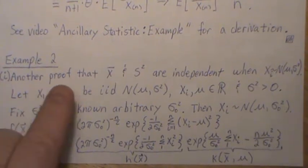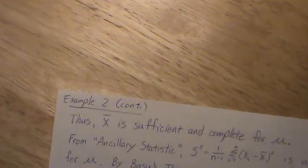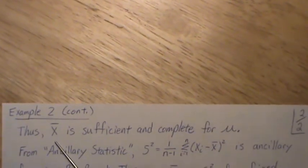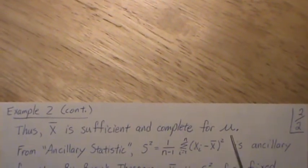So this looks like an exponential family. And that says that this statistic is sufficient and complete for mu. Or a function of it is. So then we can say that X bar is sufficient and complete for mu.